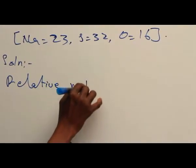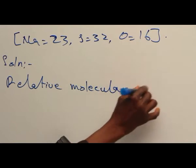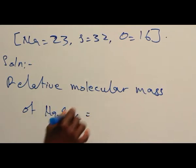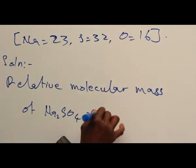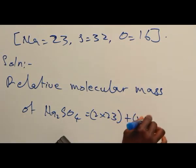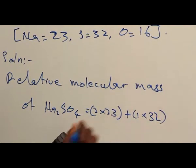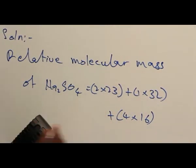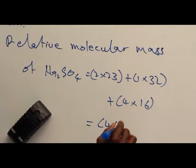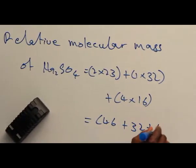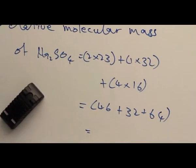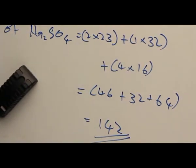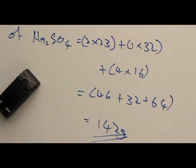Relative molecular mass of Na2SO4 is 2 multiplied by 23 plus 1 multiplied by 32 plus 4 multiplied by 16. And that gives us 142. So that is the molar mass of sodium tetraoxosulphate(VI).